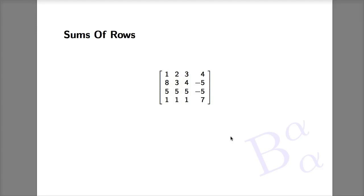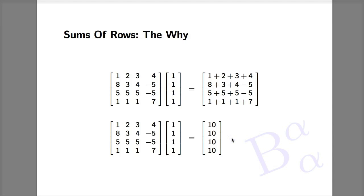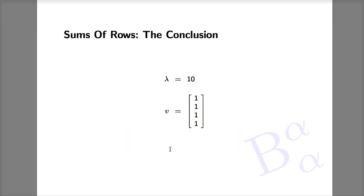Eigenvalue feature number two: sums of rows. If each row of a matrix adds up to the same number, then that number is an eigenvalue and the vector of all ones is the corresponding eigenvector. For example, in this matrix each row adds up to 10, therefore 10 is an eigenvalue and [1,1,1,1] is the corresponding eigenvector. If you multiply this matrix by the vector [1,1,1,1], the result consists of the sums of each row — that is [10,10,10,10] — which is 10 times the original vector.